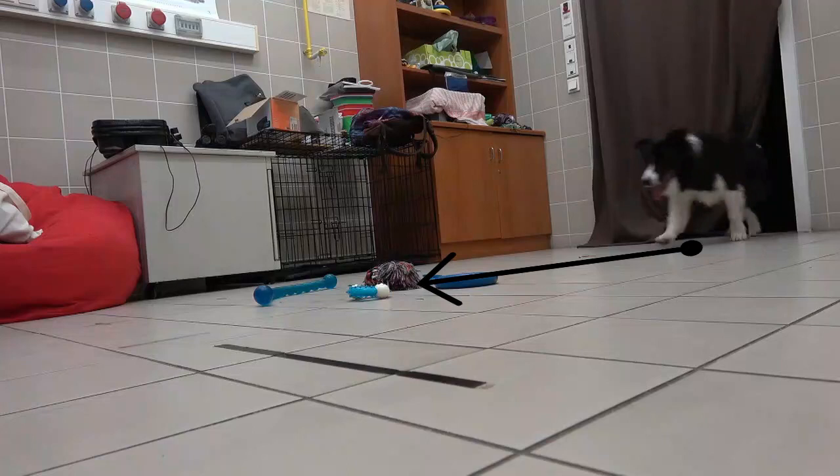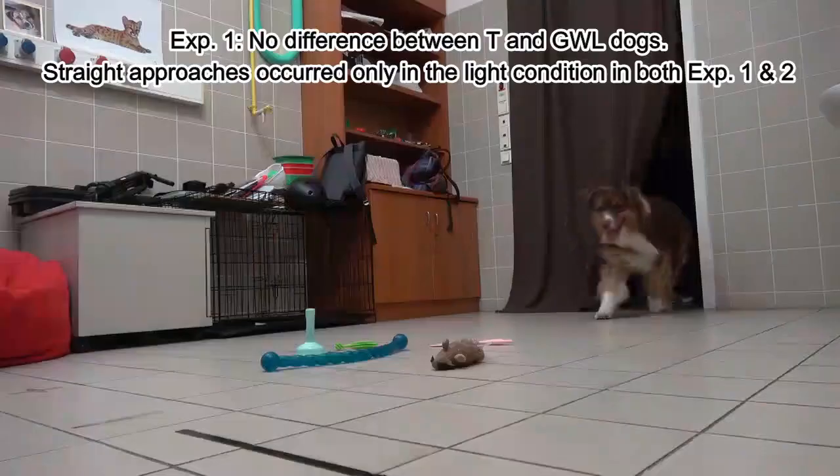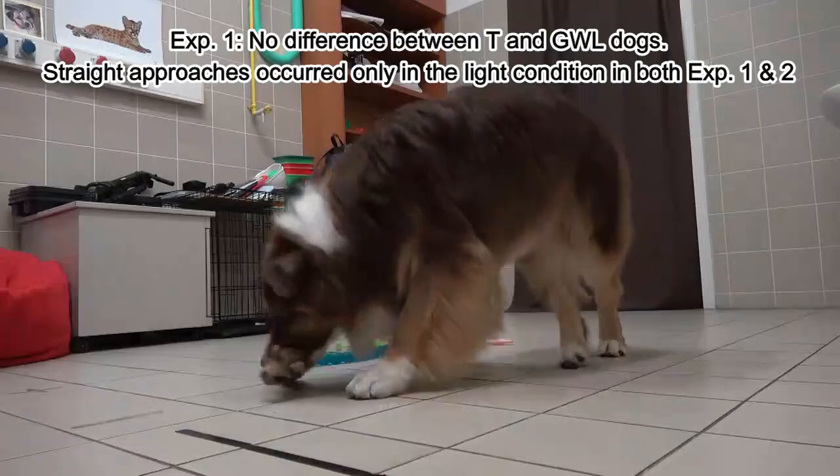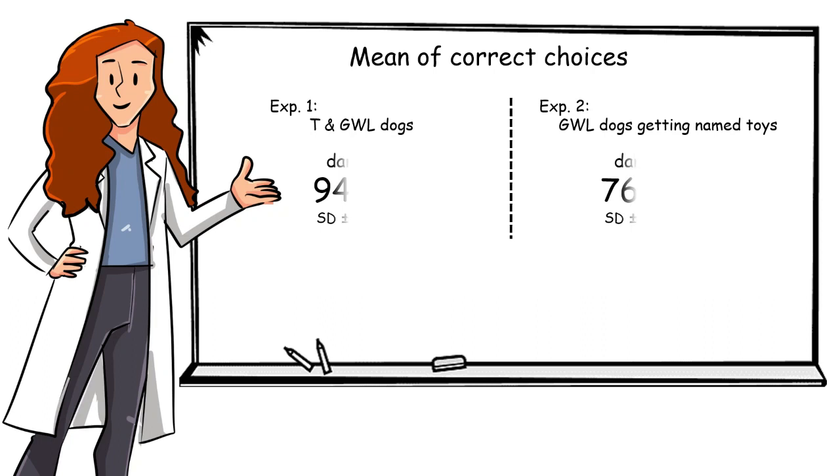We assumed that when dogs see an object from far away, they approach it in a straight line. So, we counted the number of times the dogs approached the target object in a straight line, and we found that they did so just a few times and only when the lights were on.